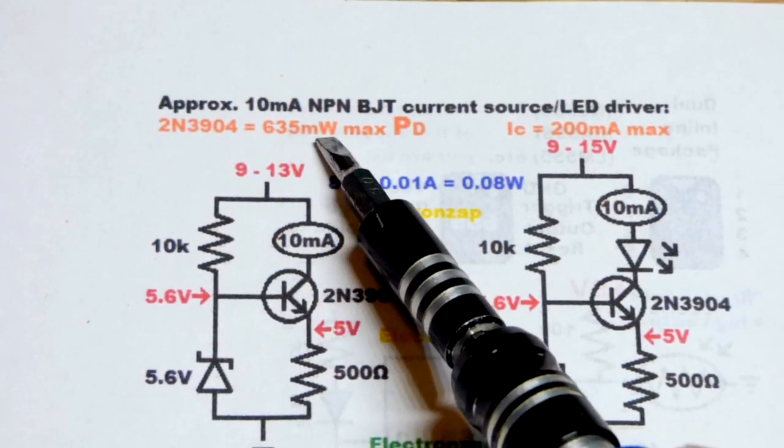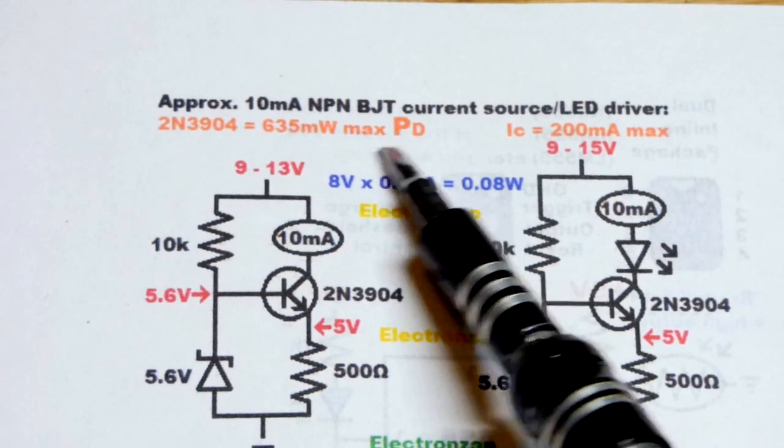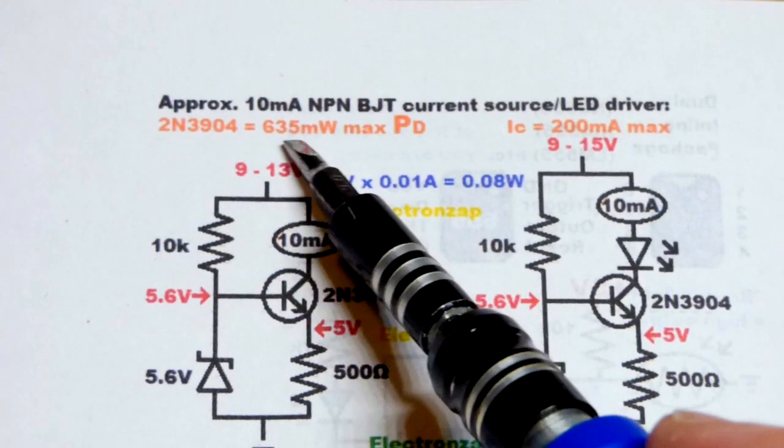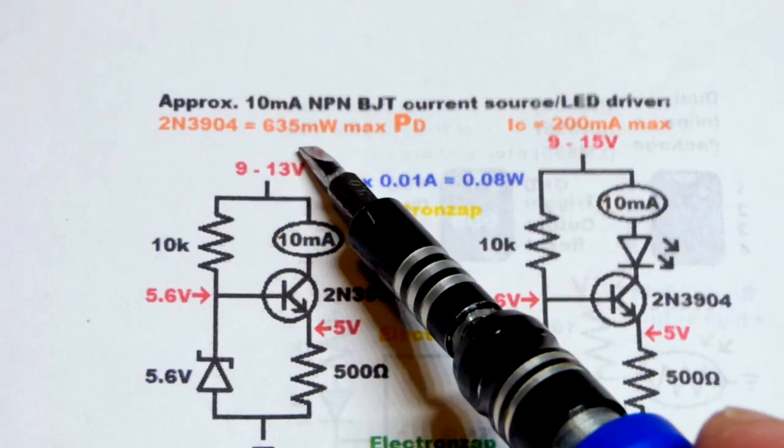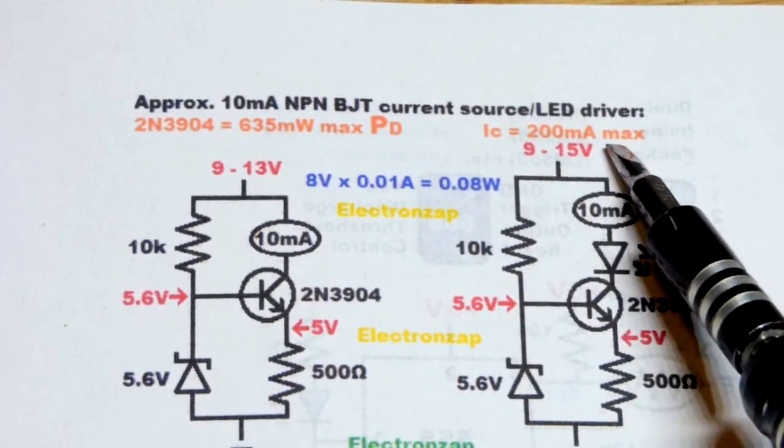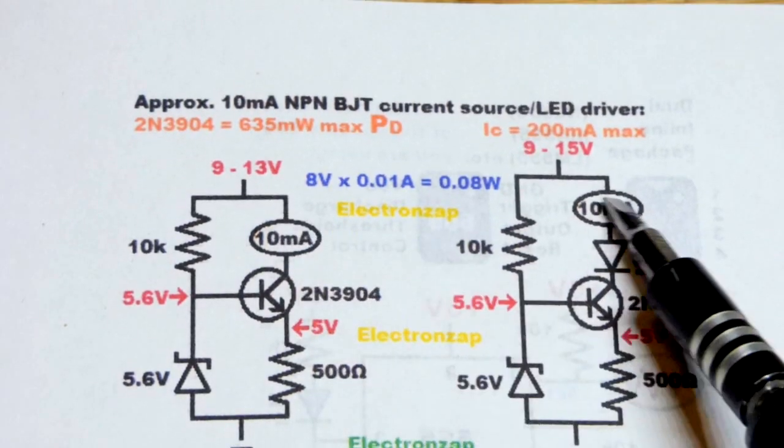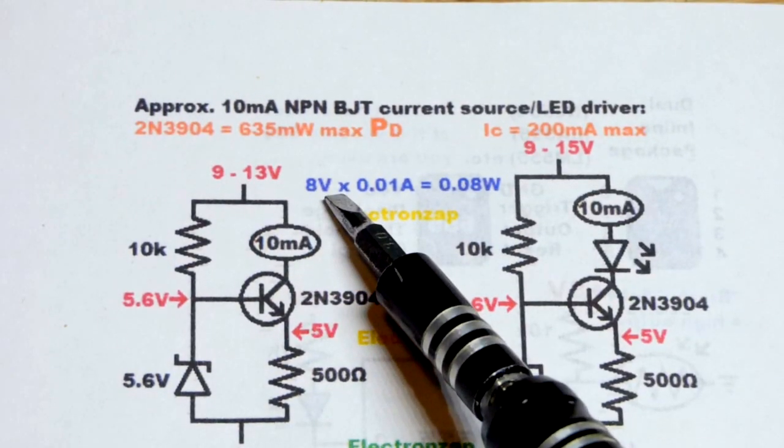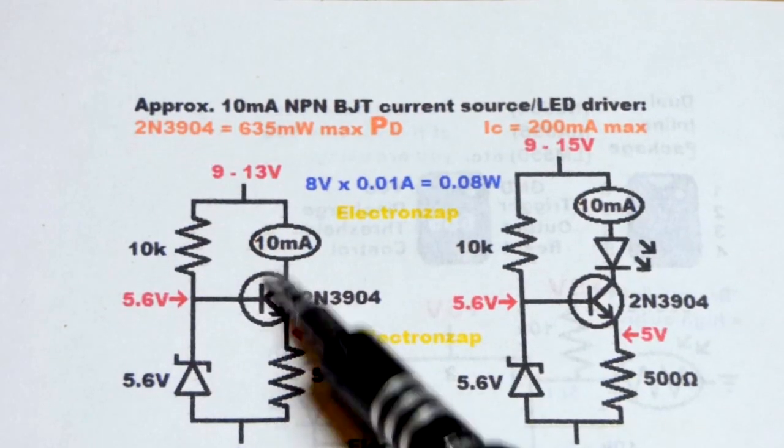And we're using a 2N3904. We can get up to 635 milliwatts of maximum power dissipation. So you won't want to aim for that but that's what it's rated for. A collector current of 200 milliamps maximum—we have it set to 10 milliamps. So we're a little more interested in the power of the transistor.